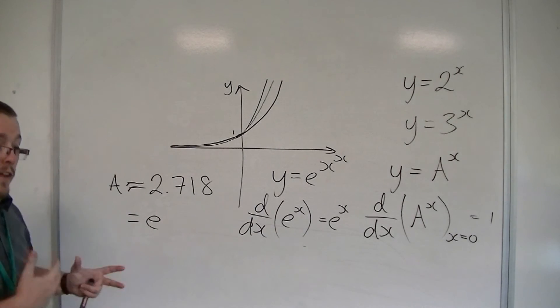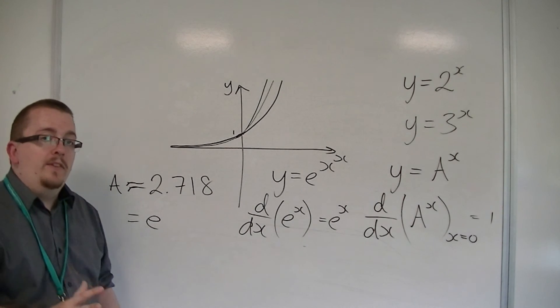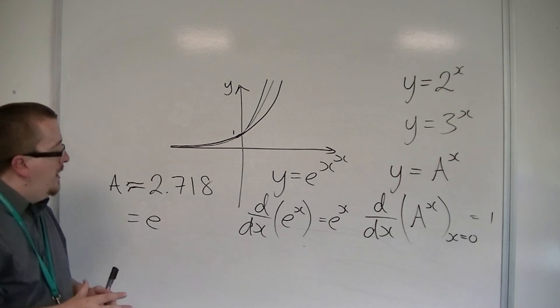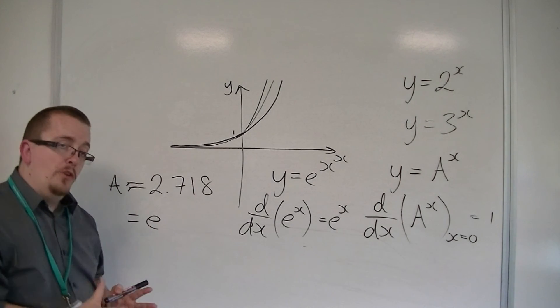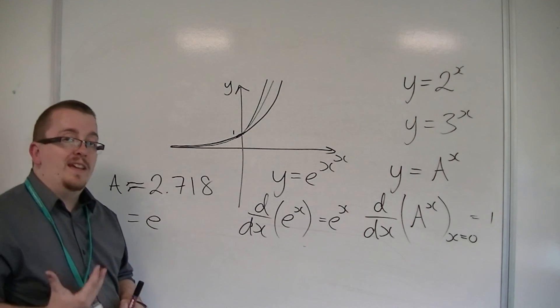E, like pi, is an irrational number, and e occurs all over the place in mathematics and science. It's used for population models, it's used for exponential growth and decay.